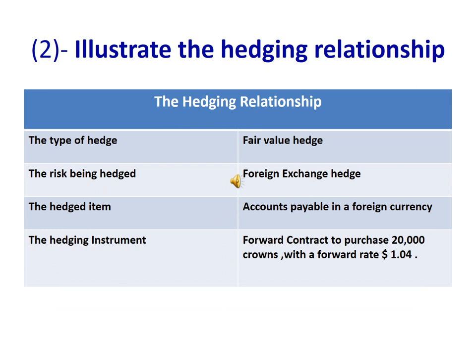For the hedging relationship: the type of hedge is a fair value hedge, because the company tries to reduce the exposure to changes in the fair value of a specific liability already recognized in the balance sheet, which is accounts payable in a foreign currency. The risk being hedged is foreign exchange risk. The hedged item is accounts payable in a foreign currency. The hedging instrument is a forward contract to purchase 20,000 crowns at a forward rate of 1.04.